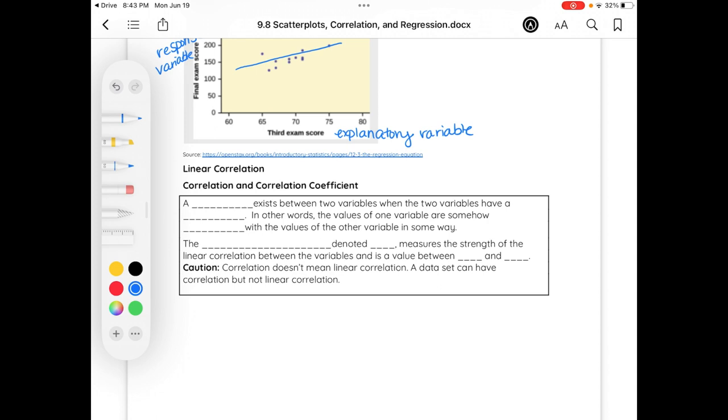Correlation measures the statistical relationship between two variables. It quantifies how changes in one variable are related to changes in another. A correlation of negative one indicates a perfect negative relationship. Correlation coefficients range from negative one to one. A correlation of one indicates a perfect positive relationship, where an increase in one variable is accompanied by an exact increase in the other. A correlation of zero suggests that no linear relationship between the variables exists. Correlation is important because it helps us understand the direction and strength of the relationship between the two variables.